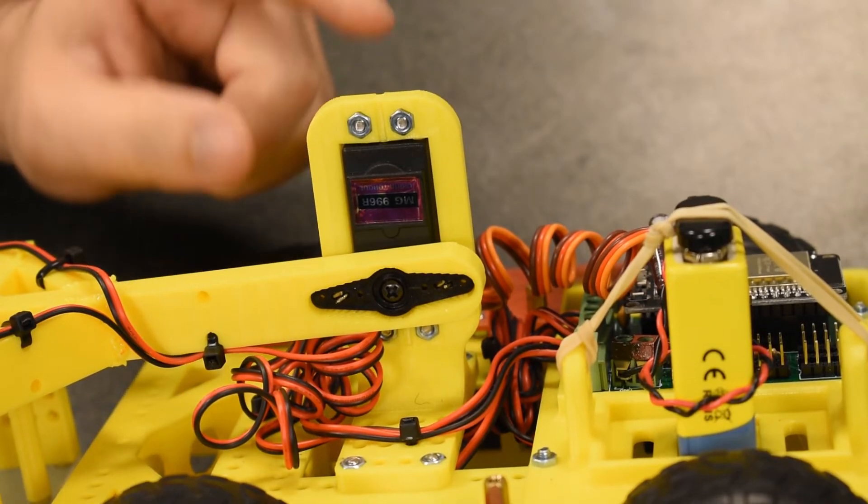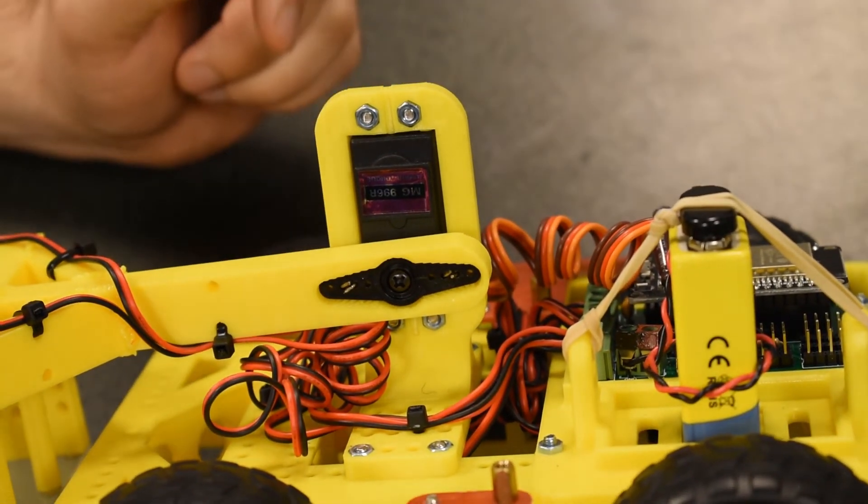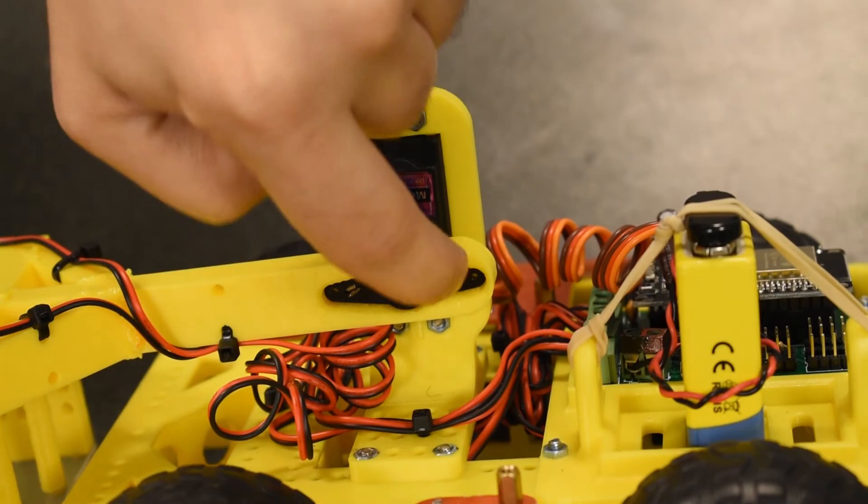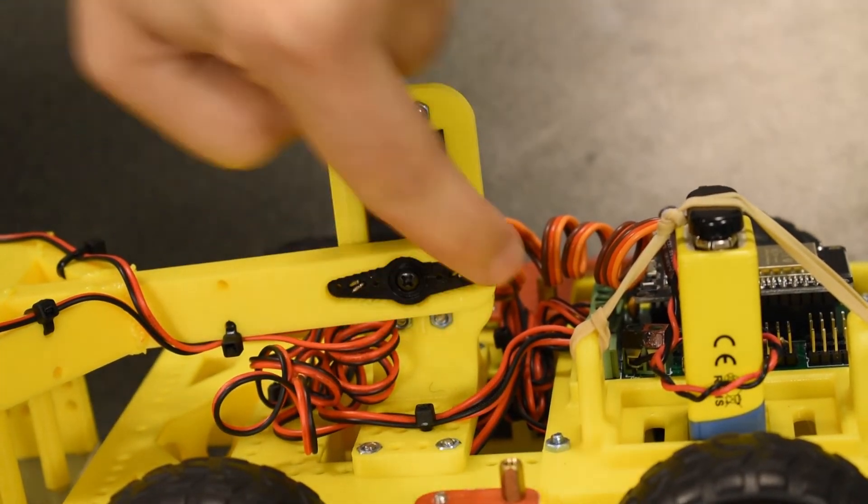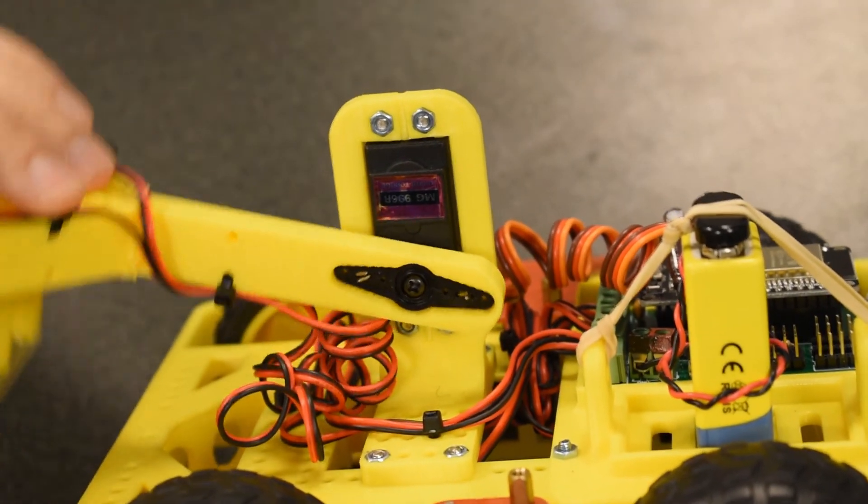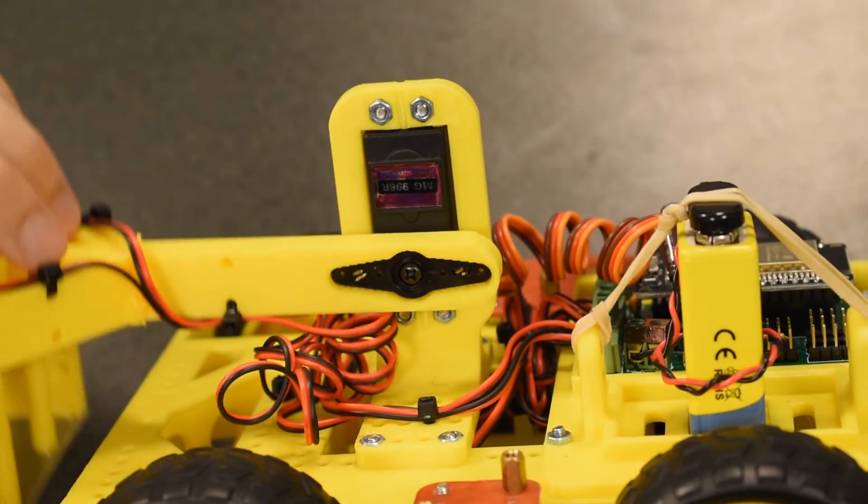The arm itself is actuated with one of these black, fairly generic servos. The servo horn is integrated into the 3D model of the arm so that the robot can control the arm up and down.